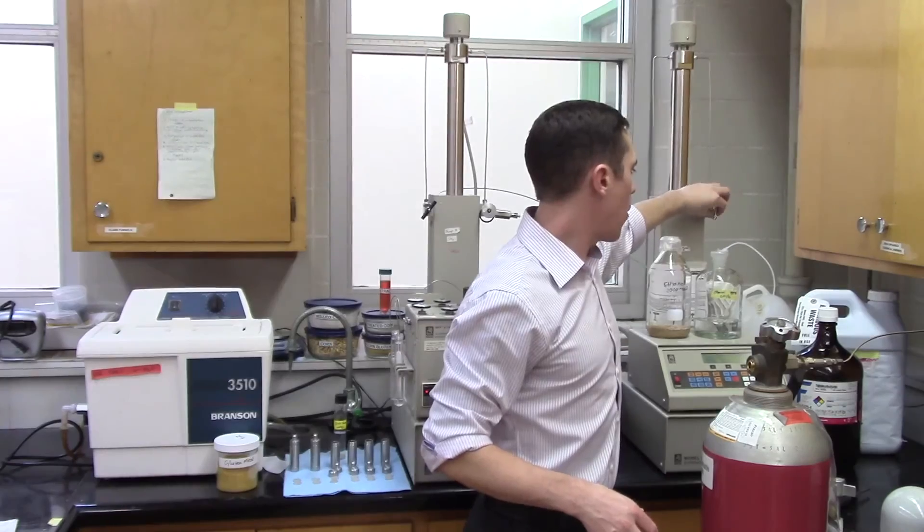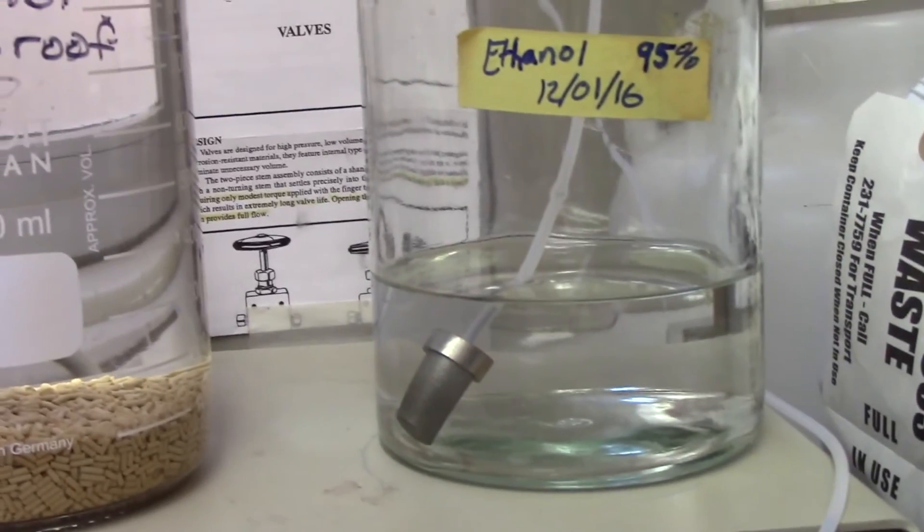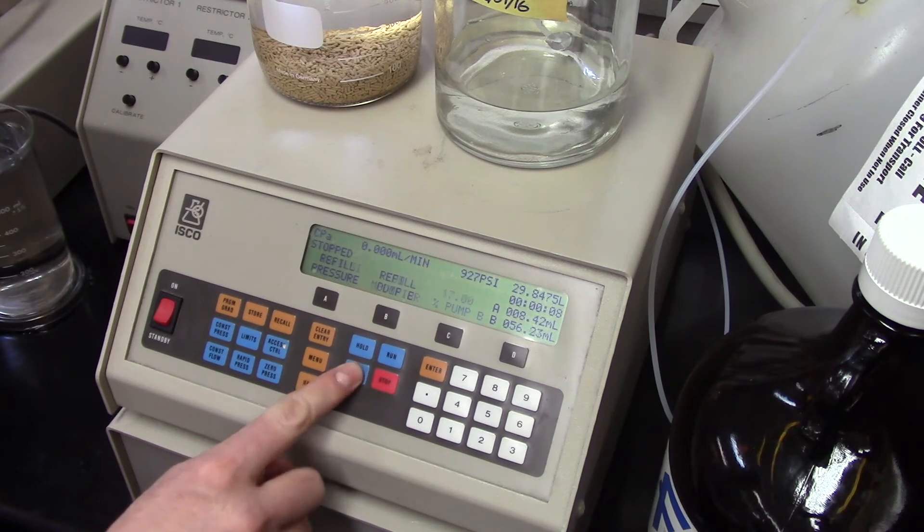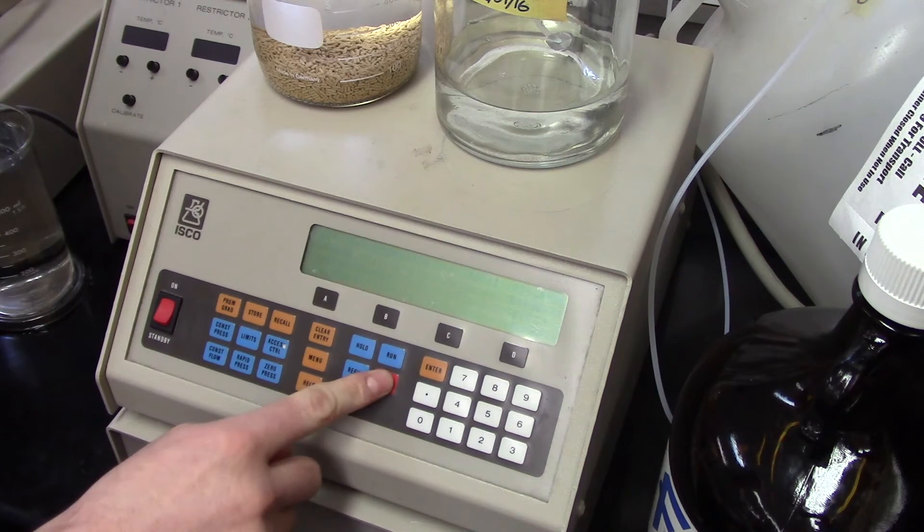To use the modifier, you have to fill up the modifier pump. Open the inlet valve on the modifier pump, and make sure the tube is placed in the modifier fluid. On the home screen, press the refill button and B. The volume of modifier in pump B is shown in the upper right-hand corner. It will stop when full, or you can stop it manually by pressing the red stop button.